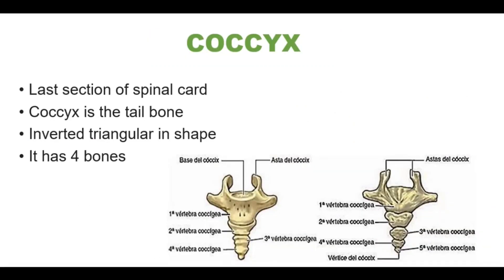The coccyx is located at the last portion or last section of the spinal cord. It is also called the tailbone. It looks triangular in shape and has four bones, which are fused together, as you can see here.